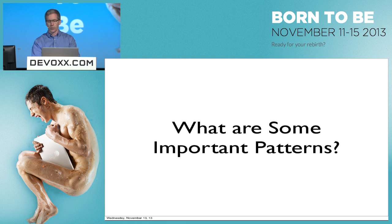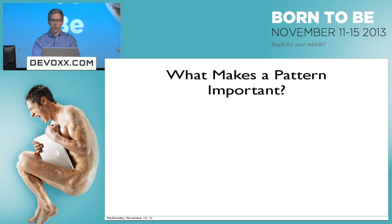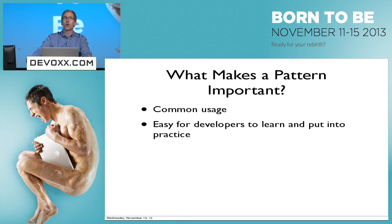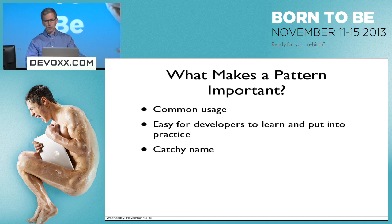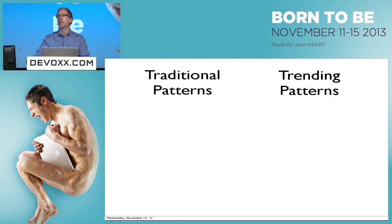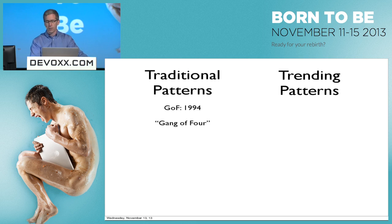Moving on to the next question: what are some important patterns? Well, first of all, we need to ask what makes a pattern important. It's a software development pattern or methodology that should be in common usage, and it should be easy for developers to actually incorporate this practice into their everyday life. And most importantly, it needs to have a neat name. There are traditional patterns and more modern patterns. The traditional patterns were popularized by the GOF in 1994 — the Gang of Four — when they wrote the book and then went on to fantastic consulting careers based on those patterns.